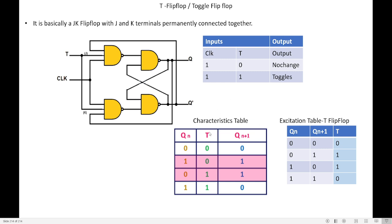From the characteristic table we can obtain the excitation table. The excitation table answers: what is the input value T, if the present state Q(n) and next state Q(n+1) are given? Since Q(n) and Q(n+1) are both given, there are two inputs forming four combinations: 00, 01, 10, 11. We need to determine the value of T for each.